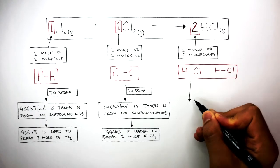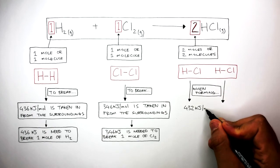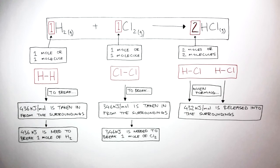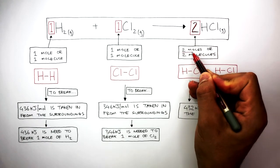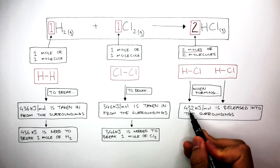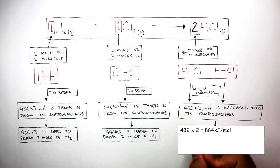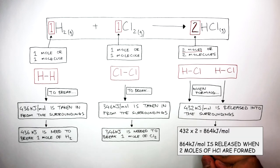Hydrogen chloride is a little different. When forming these new bonds, 432 kilojoules per mole is released into the surroundings when forming the single covalent bond between hydrogen and chlorine in each hydrogen chloride molecule. The big 2 in front of HCl tells us there are two moles of hydrogen chloride being produced, so we do 432 × 2 = 864 kilojoules per mole released when two moles of HCl are formed.